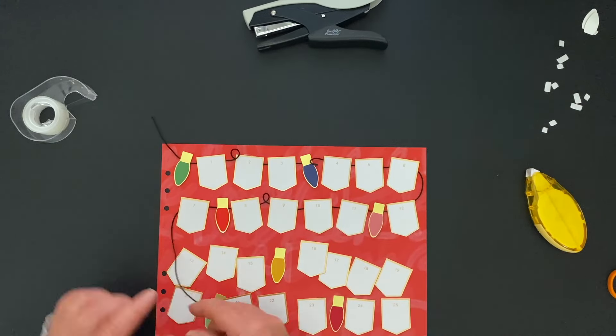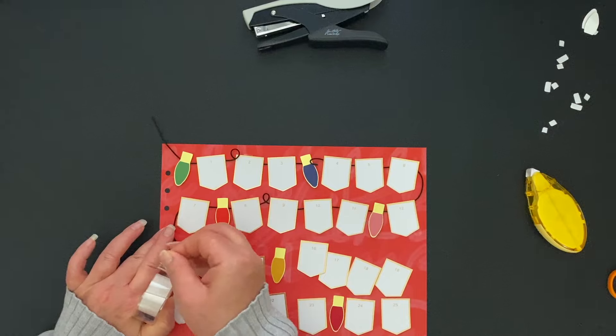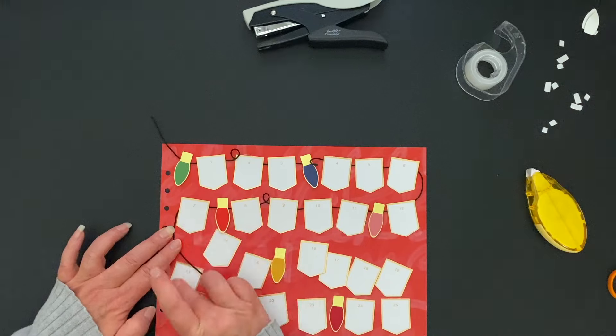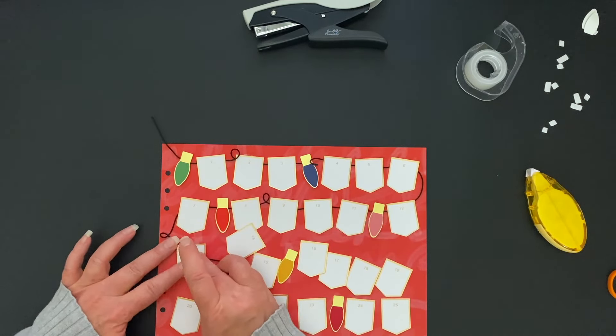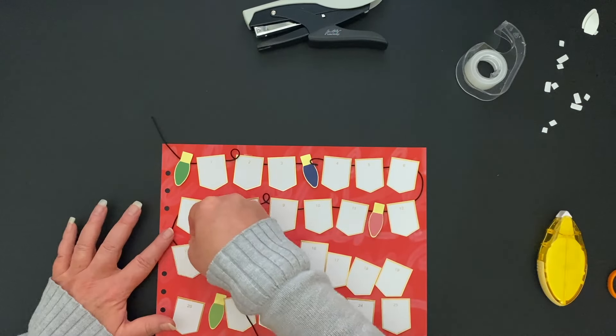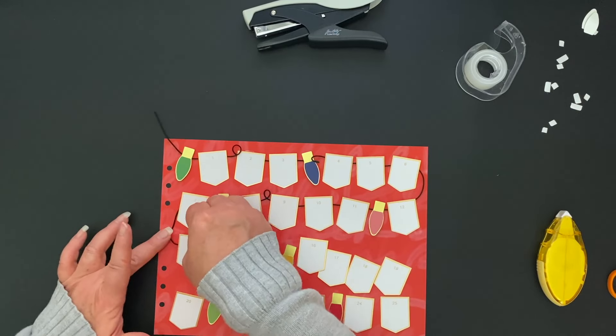That's something that you want to think about. If you want them to all look like they are more raised, you can totally use the scrapbook adhesive squares underneath the banners as well.